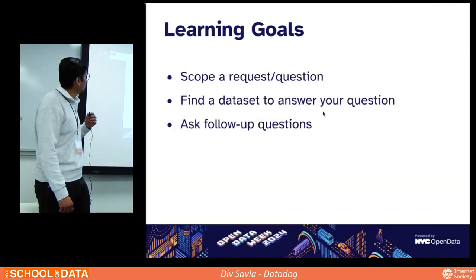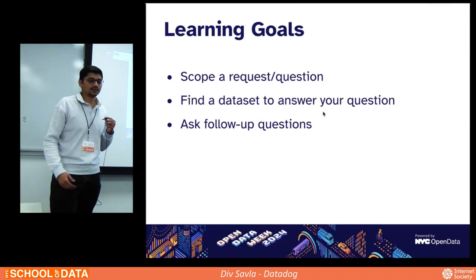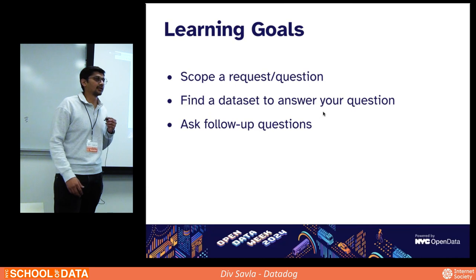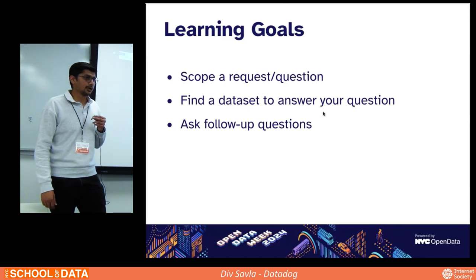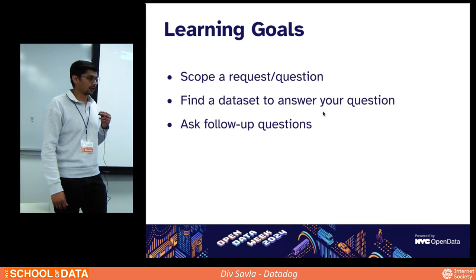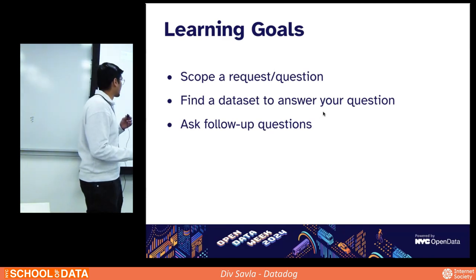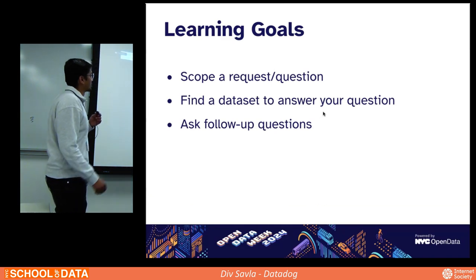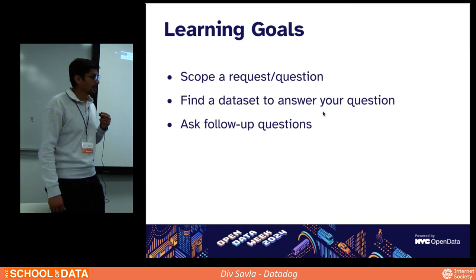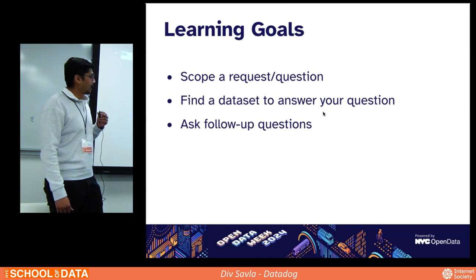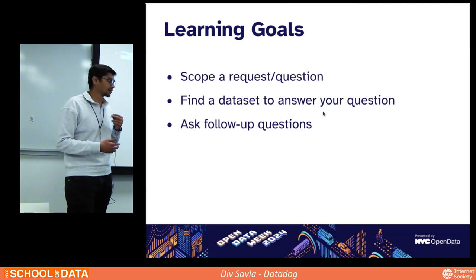Thank you for being here. What are we going to learn today? Basically, as we get access to data, there are a lot of stakeholders asking us exciting questions about it. More often than not, they're not very well scoped and we don't know what we're going to be looking at. So how do you scope these requests? That's what we're going to talk about today - scoping a request or question from your stakeholders, finding the right dataset, and after the initial question has been answered, how else you can enhance that analysis.